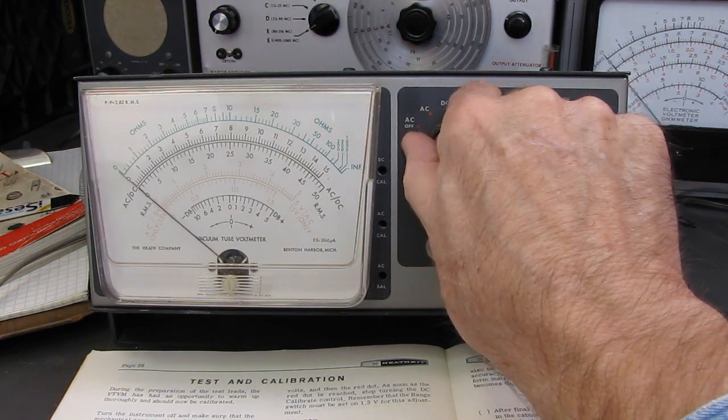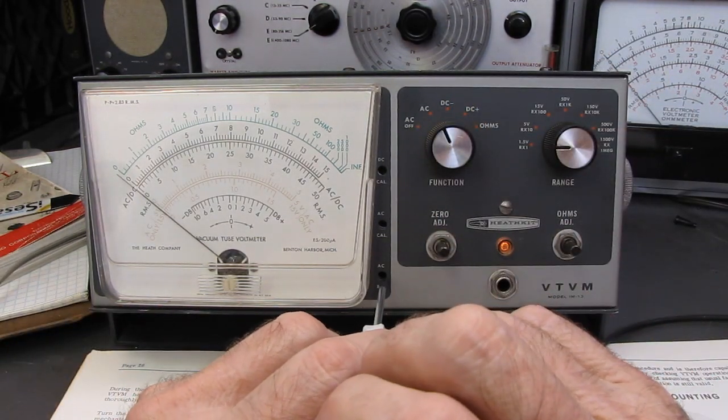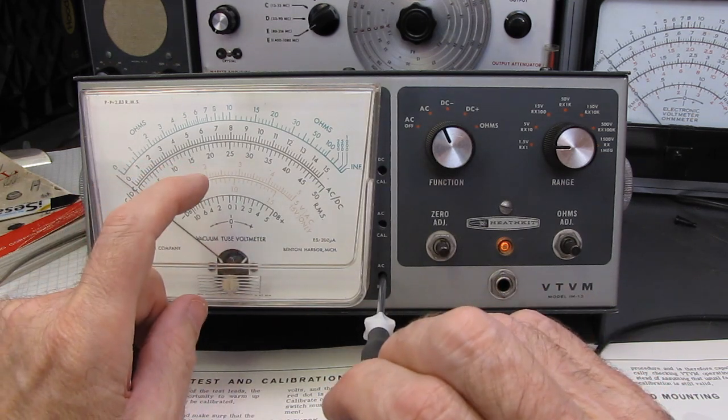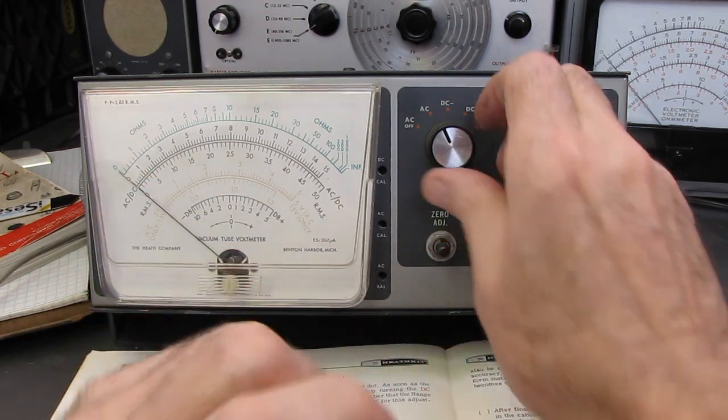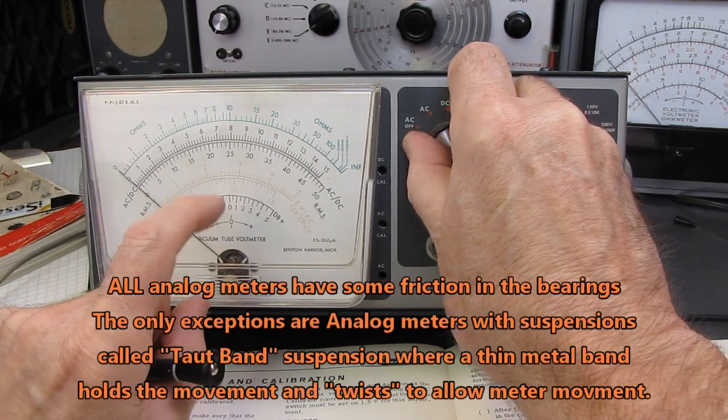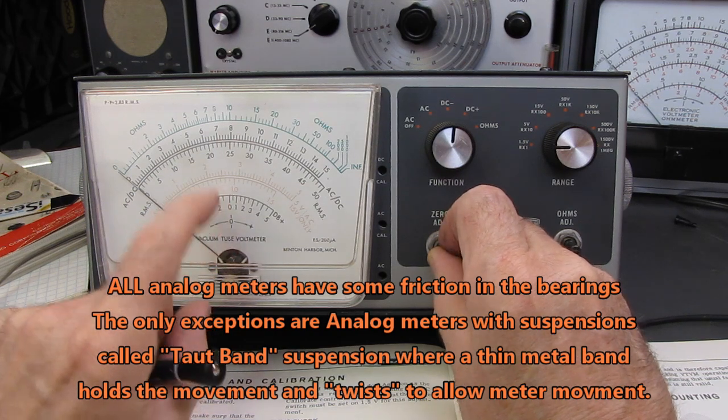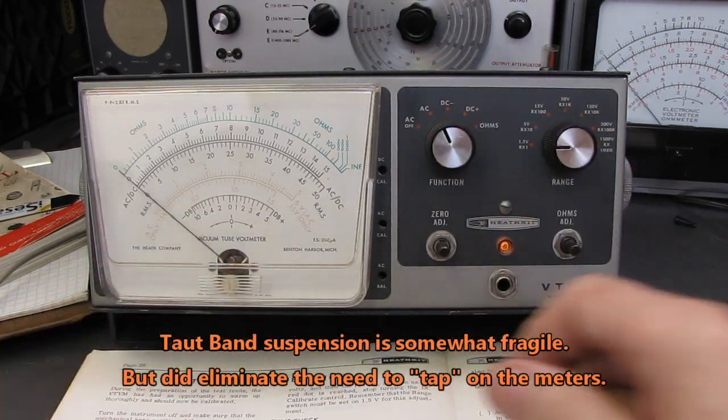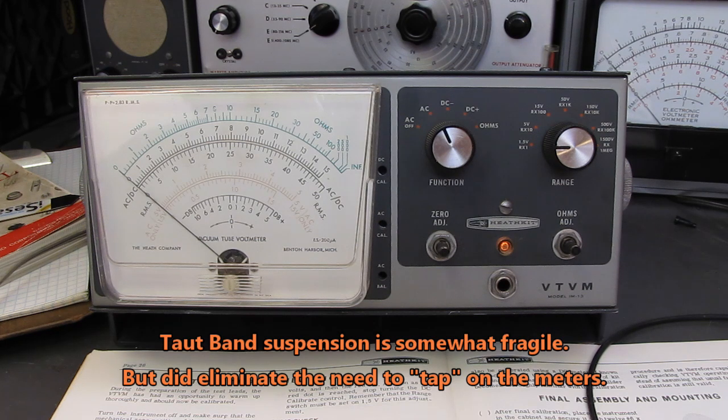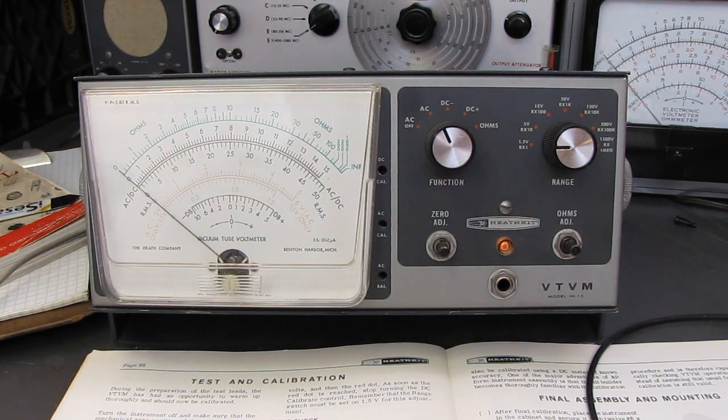So in other words, wherever it is on the DC settings, the AC settings should be the same. That zeroes the AC so that the needle sits in the same position as it does on the DC setting. Okay, AC balance is done.